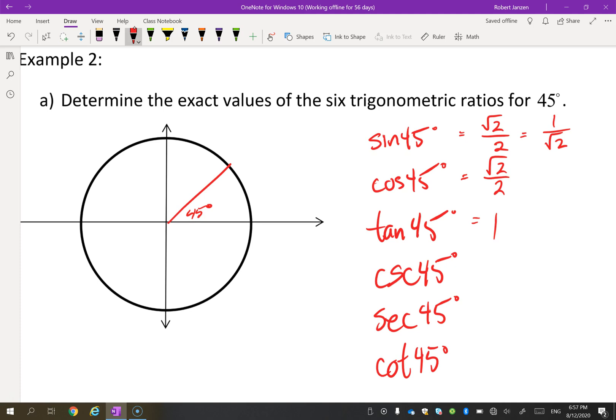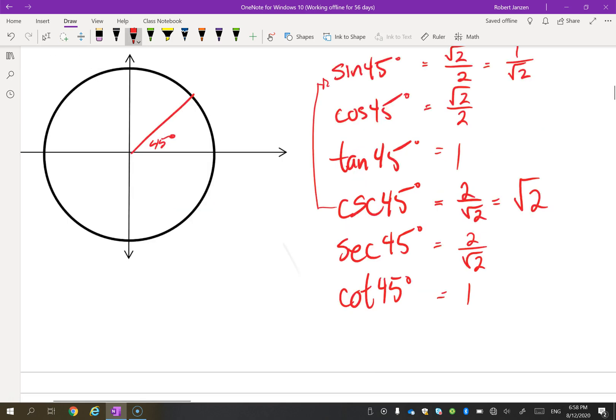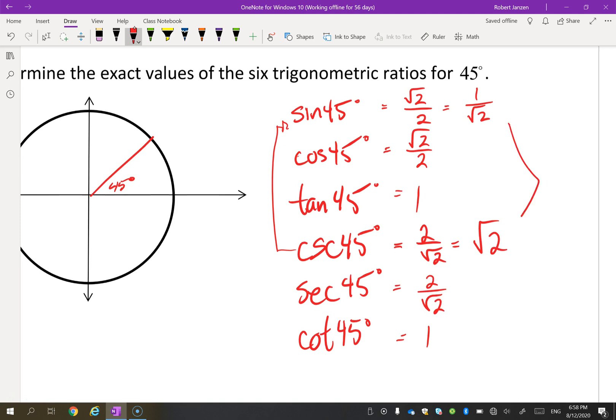By the way, that could also be 1 over root 2. Those are the same things. One is rationalized, one's not. Cosine is also root 2 over 2 and tan is 1. Those you should have memorized from last year. Now what about the reciprocal? Well, the reciprocal of cosecant is the reciprocal of sine. So if we flip sine upside down, you get 2 over root 2. Again, if you rationalize the denominator, you're going to multiply by root 2 over root 2 and you just get root 2. And the reciprocal of 1 is 1. Now just a quick comment about, you know, I've got two different answers here. Both are okay. The good news is you do not, I'll repeat, you do not need to rationalize the denominator. Either one is okay.